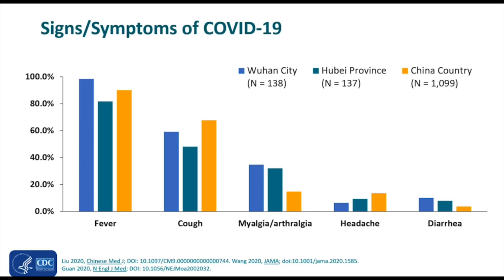We will start with discussing signs and symptoms of coronavirus. This slide is very informative. The number one most common symptom is fever — more than 80% of patients had fever. Cough is the second most common symptom, occurring in at least 60% of patients, followed by myalgia, arthralgia, headache, and diarrhea. These are the common symptoms that Chinese researchers reported from Wuhan City, Hubei Province, and China as a whole.